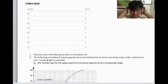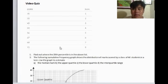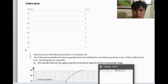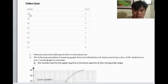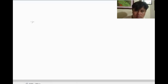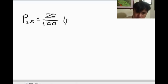Today you will be answering this quiz in Math in the Modern World. The first question is: find out where the 25th percentile is in the above list. To find the 25th percentile, we have this solution: 25 over 100 multiplied by n plus 1.